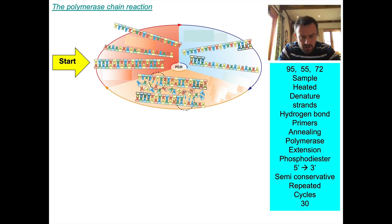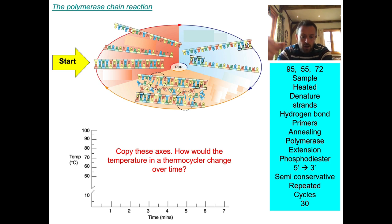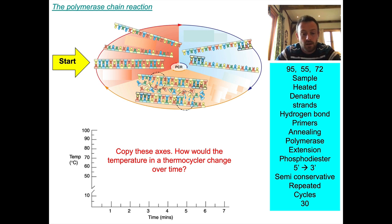Hopefully you gave it a go and got all the words in the blue box. One more follow-up activity: copy the axes in your book. How would the temperature change in a thermocycler over time? Don't worry too much about exact timings — each stage will be a minute or two. Draw in what you think the temperature would look like over two or three cycles, then pause the video.